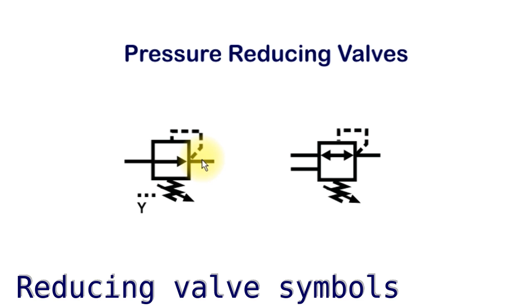But as the pressure increases, we sense the pressure back through here to whatever the spring setting is. It pushes the valve over and shuts off the flow, so we can then get a higher pressure on the input than we do on the output.